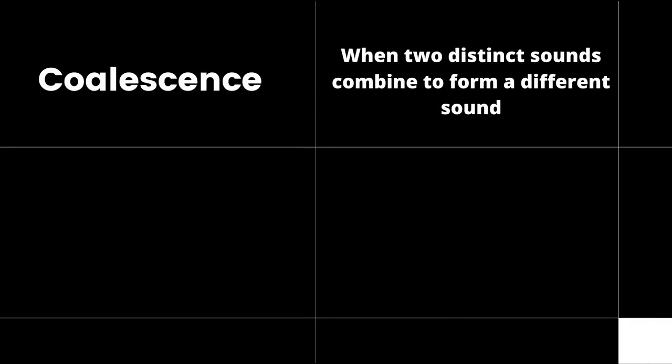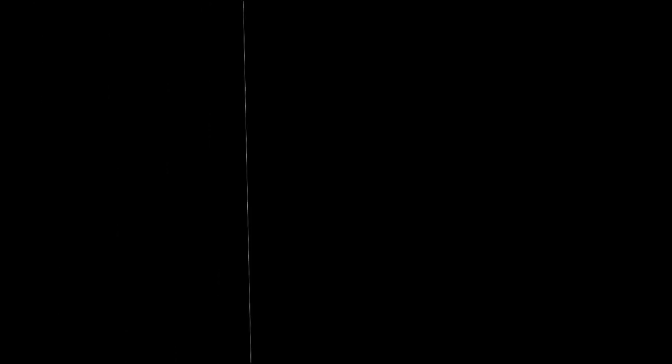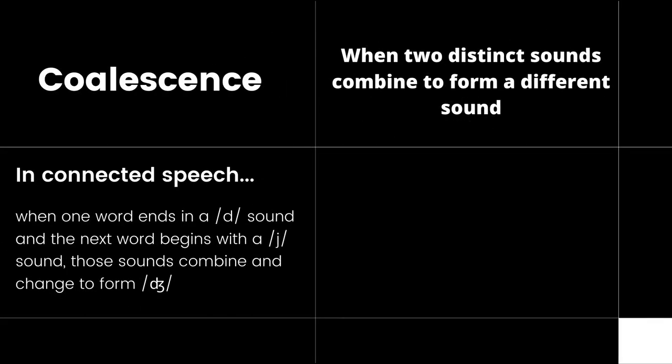Coalescence occurs when two distinct sounds combine to form a completely different sound. In connected speech, when one word ends in a d sound and the next word begins with a y sound, those sounds combine and change to form a j sound.